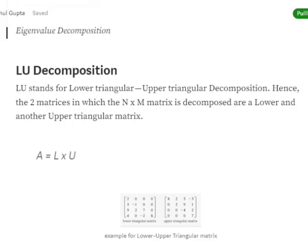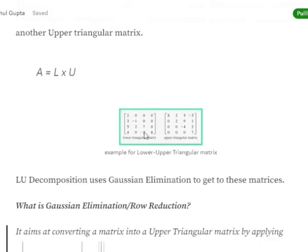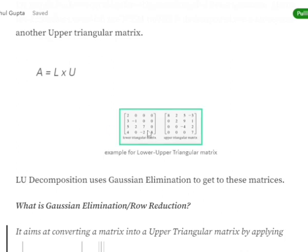LU decomposition is one of the most famous matrix factorization techniques, where L stands for lower triangular and U stands for upper triangular decomposition. The original matrix gets decomposed into two matrices — one of type lower triangular and another upper triangular. You can see what upper and lower triangular matrices look like in this particular image.